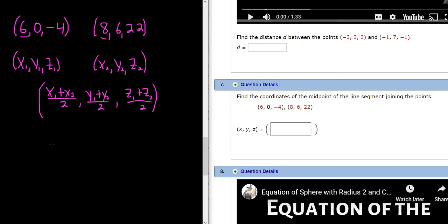So 6 plus 8 divided by 2, that would be the first entry, the first component. The next one would be 0 plus 6 divided by 2. Just add them up and divide by 2. And the last one would be negative 4 plus 22 divided by 2.